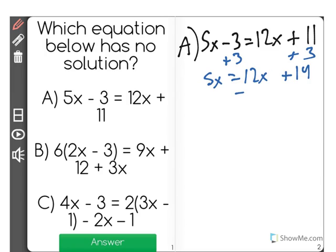I could subtract 12x from both sides, and I'll get negative 7x equals 14. Divide both sides by negative 7, which will leave x by itself, and I'll find out that x equals negative 2.